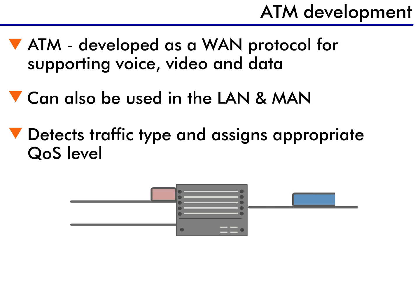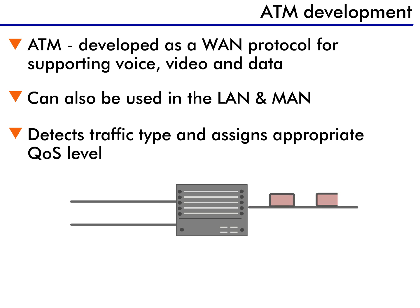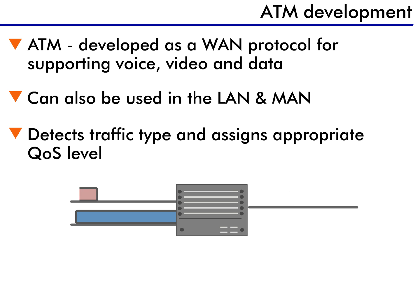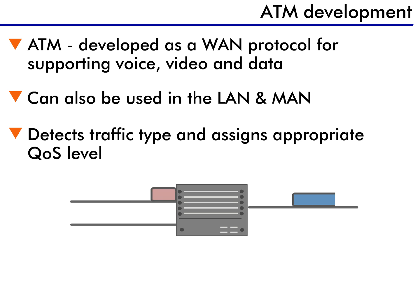This graphic gives you a good view of the problem with existing networks that don't use ATM. In this example, two frames of information arrive at a switch. A frame is a variable-length packet of data. One frame of information is very small but has a high priority. The other frame is very large, however its priority is low.